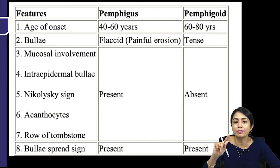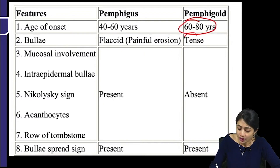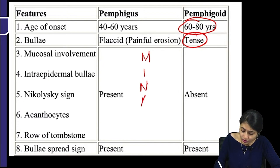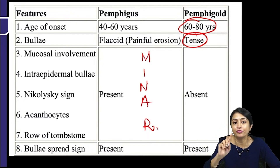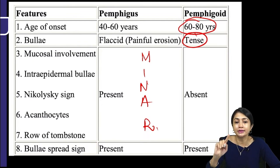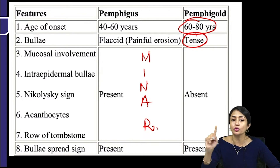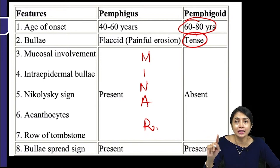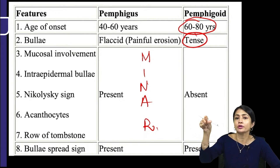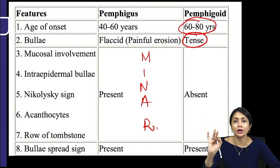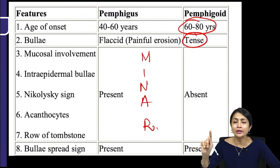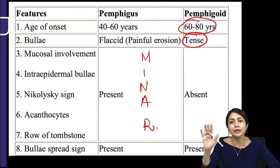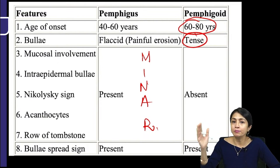To differentiate pemphigus from pemphigoid: elderly age group and tense bullae point to pemphigoid. Use the mnemonic MINAR — positive in pemphigus, absent in pemphigoid. M for mucosal involvement, I for intra-epidermal bullae, N for Nikolsky sign, A for acantholytic cells, R for row of tombstone. Nikolsky sign: tangential pressure on skin causes formation of erosion or bulla — seen in pemphigus, not pemphigoid. In DIF: fish net pattern in pemphigus, linear pattern in bullous pemphigoid.